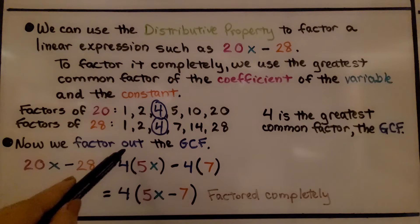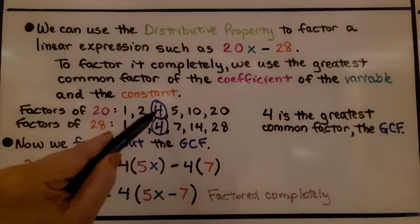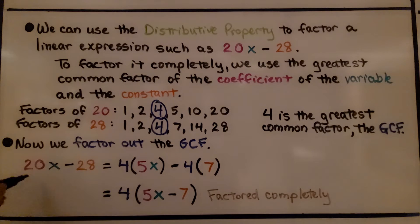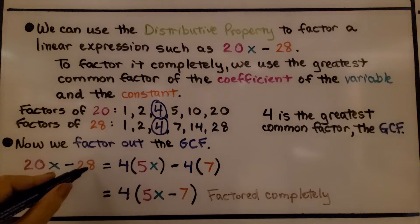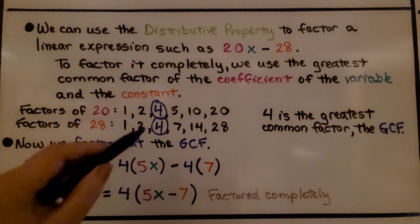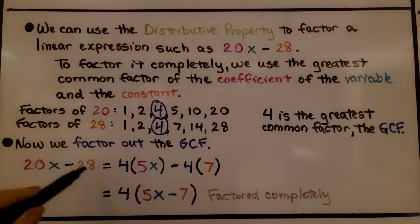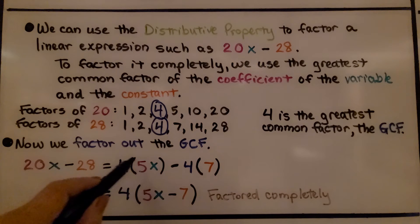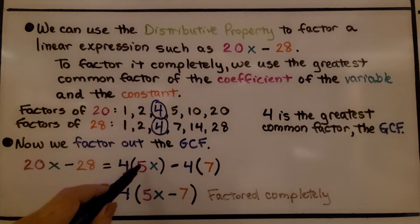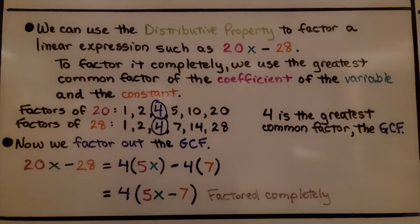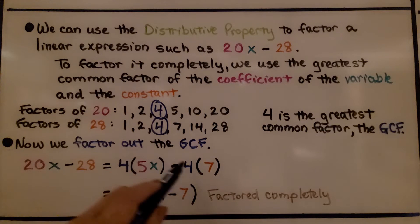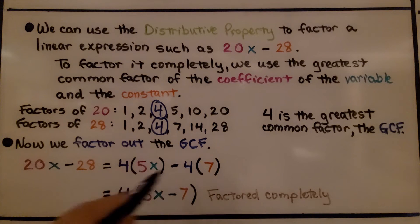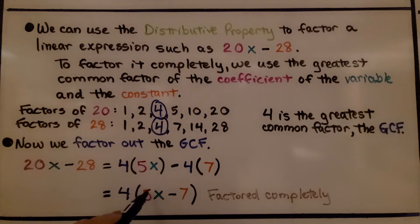Now we factor out the GCF. We're going to factor out the 4 from 20x minus 28. We can write it as 4 times 5x minus 4 times 7. Since we're using 4 for both terms, we pull the 4 out front and write 5x minus 7 inside the parentheses. And we've factored it completely.